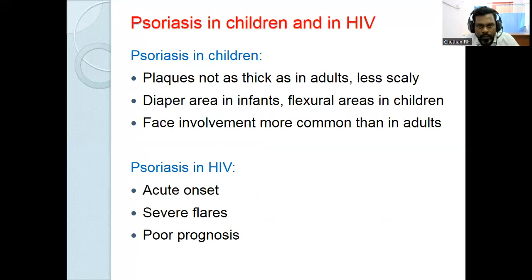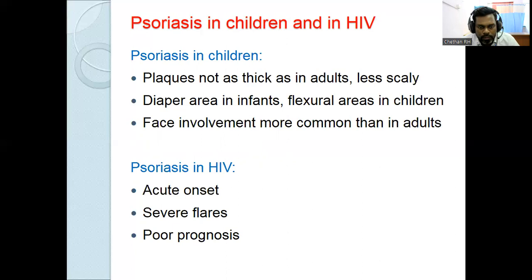Psoriasis in children: plaques are thinner with less scaling. Most commonly affected sites are the diaper area in infants and flexural areas in children. Face involvement is more common in children than adults. Psoriasis in HIV has acute onset, severe flares, and poor prognosis, presenting as both plaque-type and erythrodermic psoriasis.